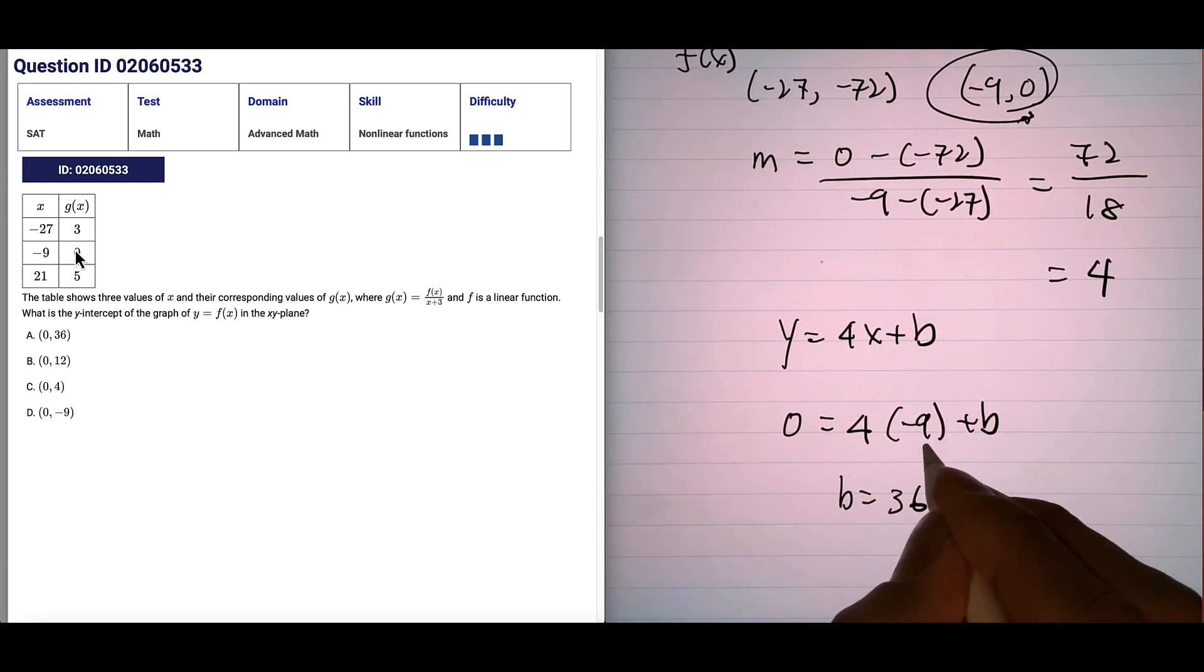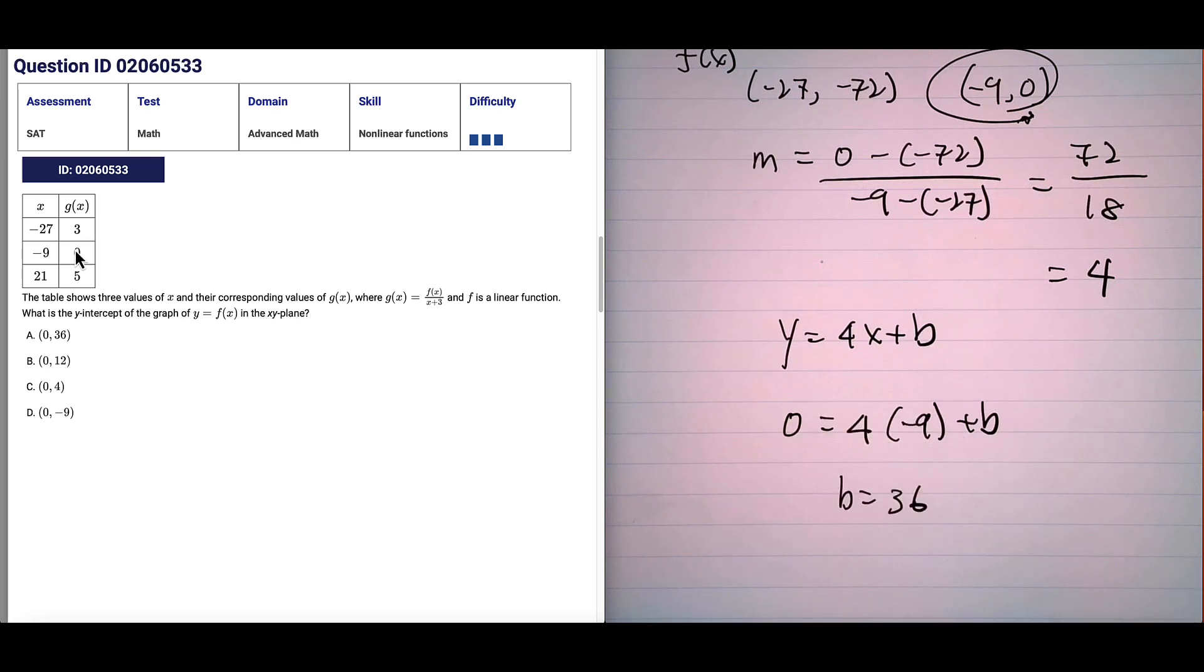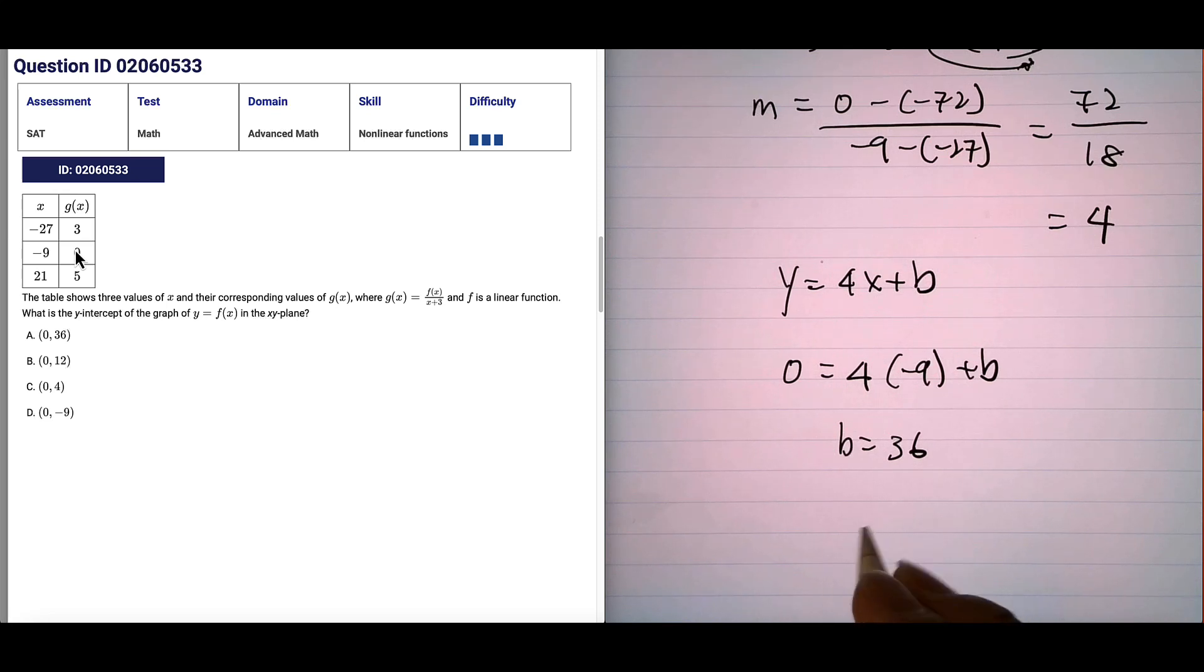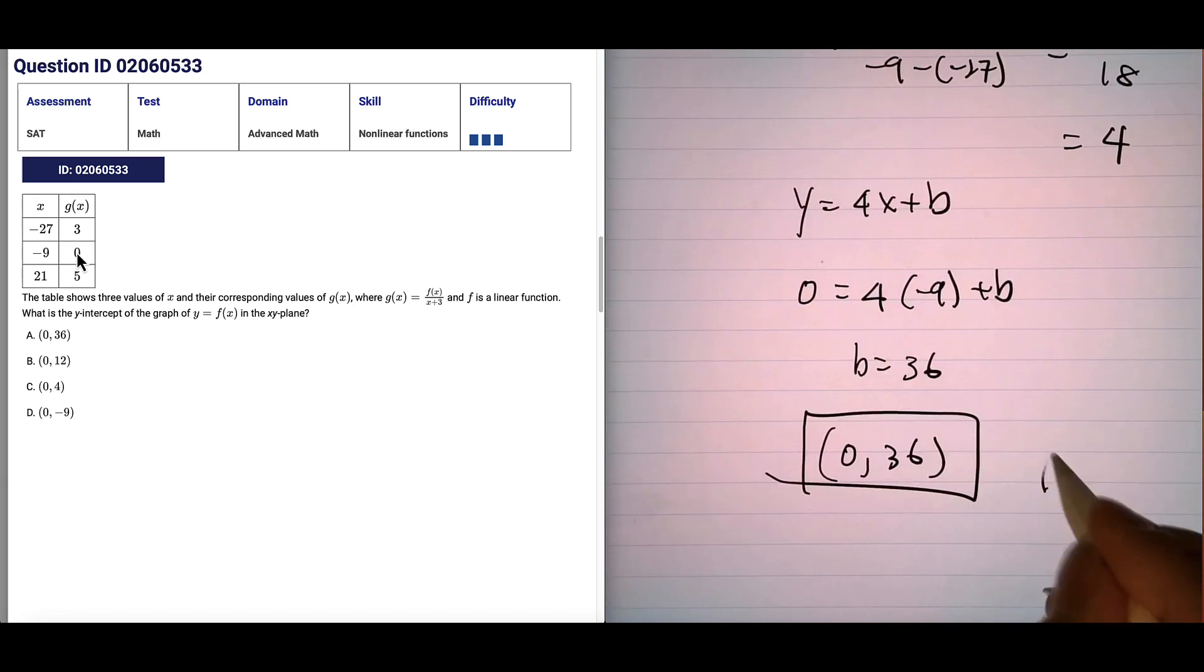Because if you multiply 4 and negative 9, you bring it to the other side, it's going to change the sign and make it positive. So the answer is 0, 36 for our y-intercept coordinate. Okay? The answer is D.